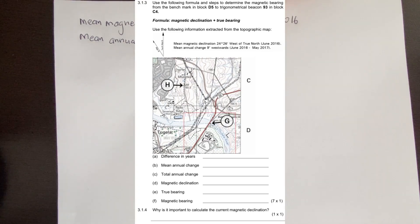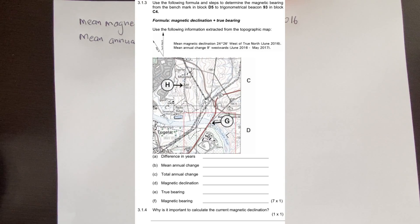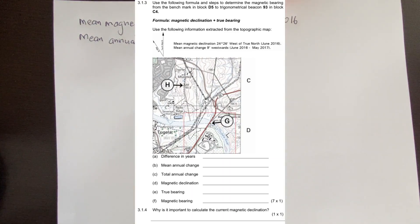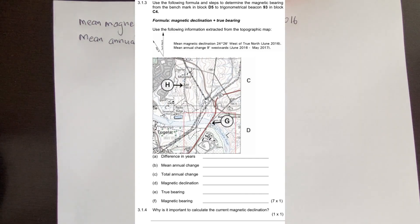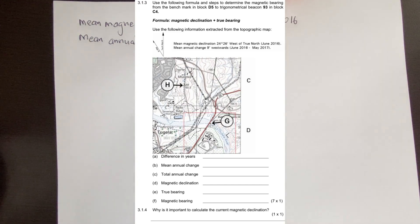Before we work this out, please note that most of you are confusing the date of the map and the date the annual change was recorded — 2016 and 2017. You must ignore those dates of annual change. The only date we are focused on is 2016, which is the date of the map.